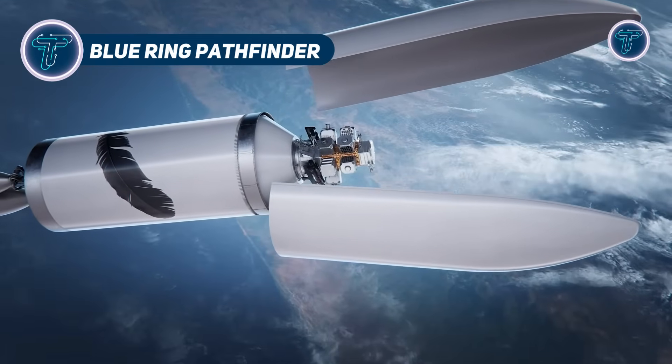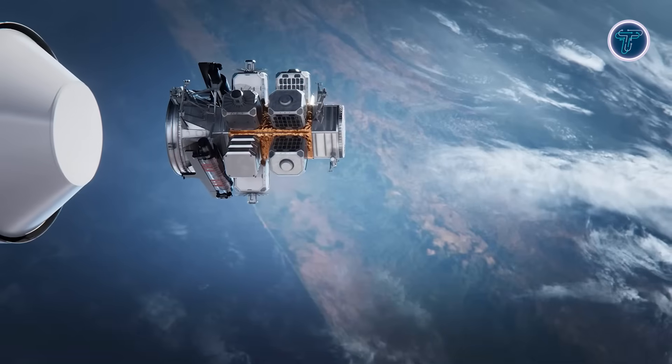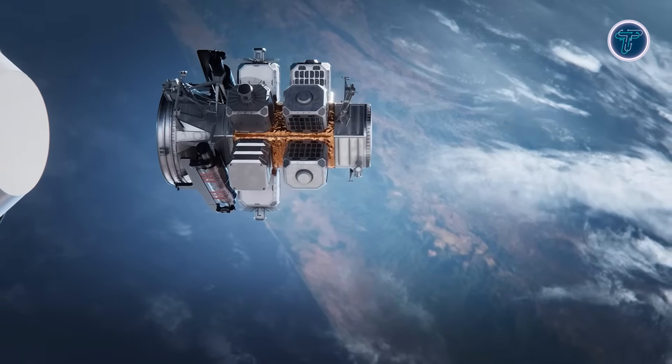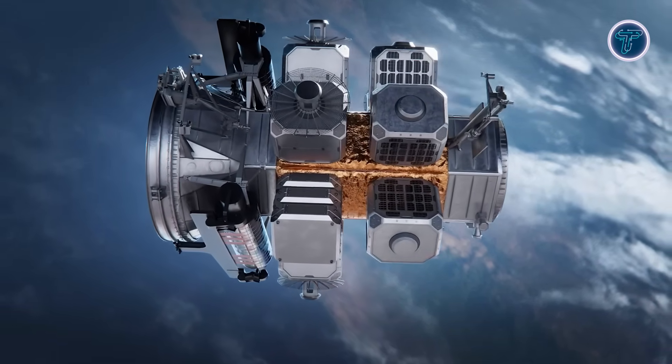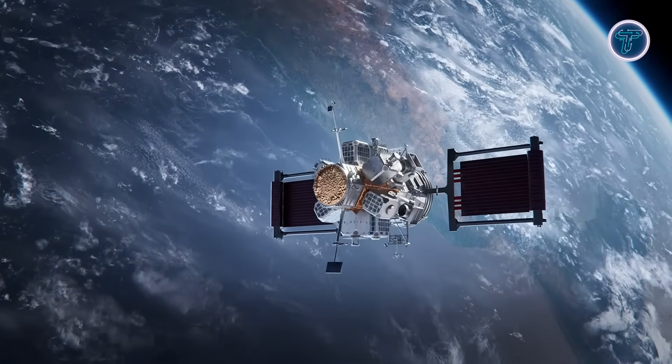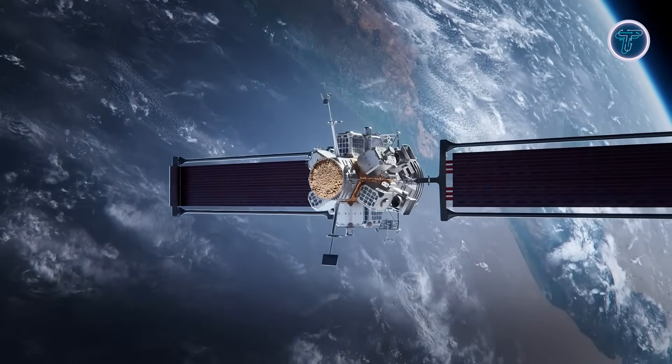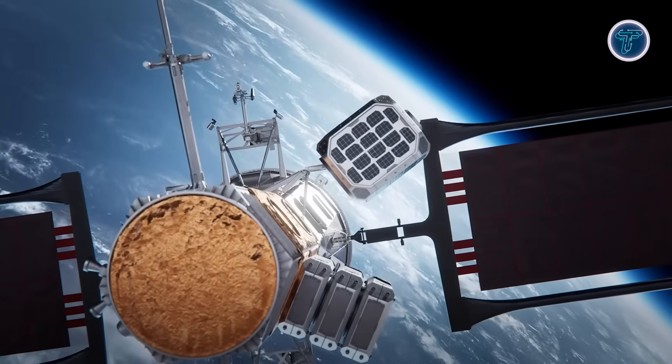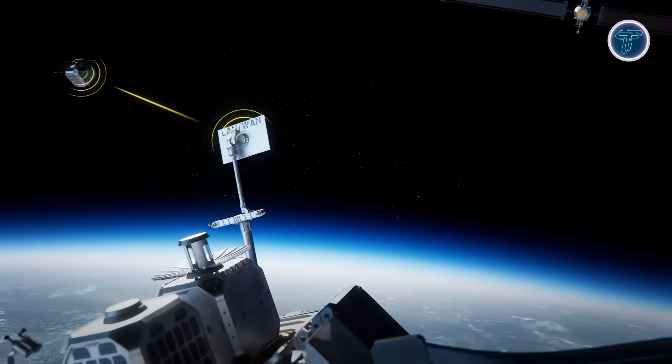Blue Ring Pathfinder. Blue Ring Pathfinder is an experimental mission by Blue Origin aimed at evaluating foundational systems planned for the future Blue Ring orbital platform. Launched on January 15th, 2025, during the inaugural flight of the New Glenn rocket, the Pathfinder remained attached to the rocket's second stage rather than deploying separately. Its mission is to validate core systems such as communications, onboard computing, and power management while in orbit.